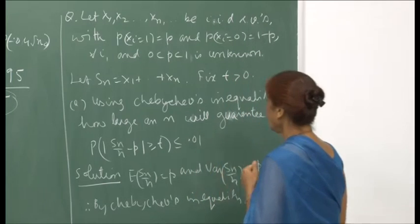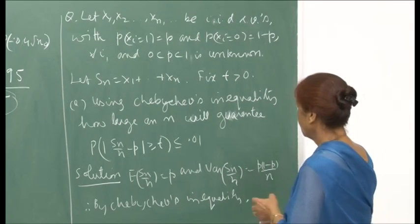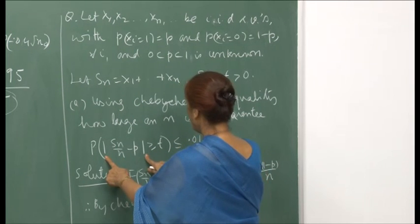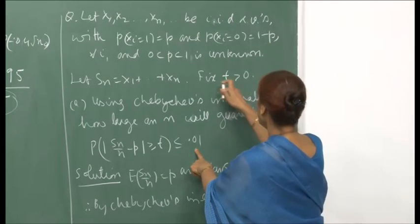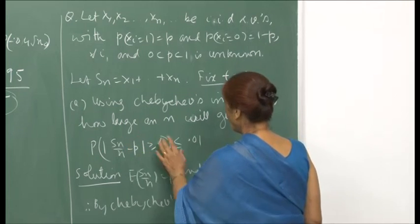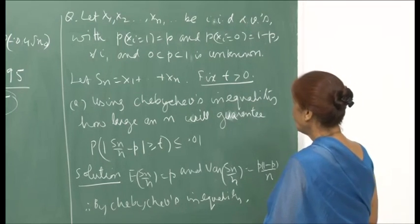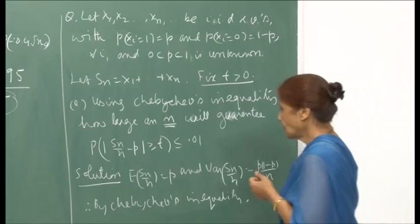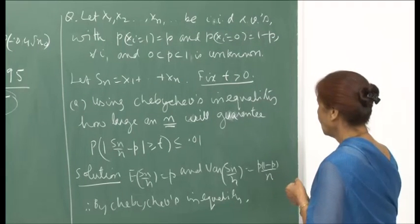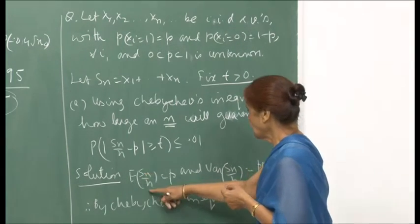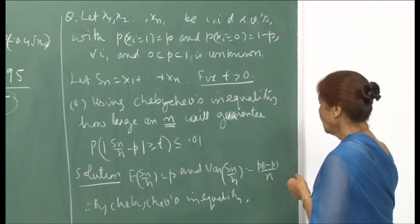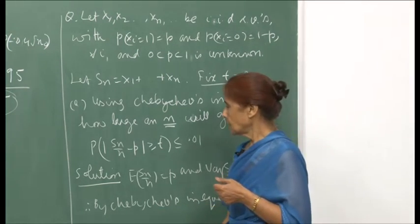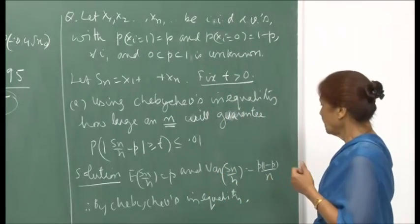The question is: using Chebyshev's inequality, how large an n will guarantee that the probability of |S_n/n - p| >= t is less than or equal to 0.01, for a given t? We will compare the value of n given by Chebyshev's inequality against the value given by the CLT. Since E[S_n/n] = p and Var(S_n/n) = p(1-p)/n, we apply both methods.